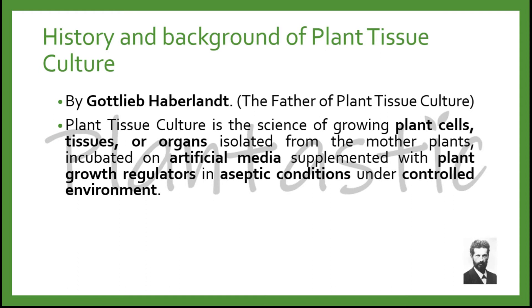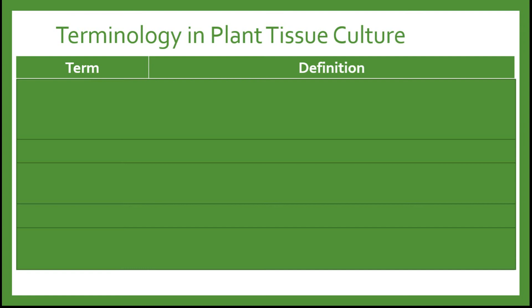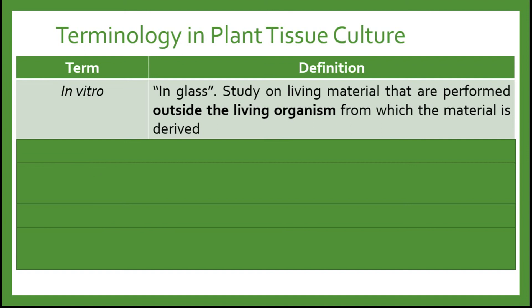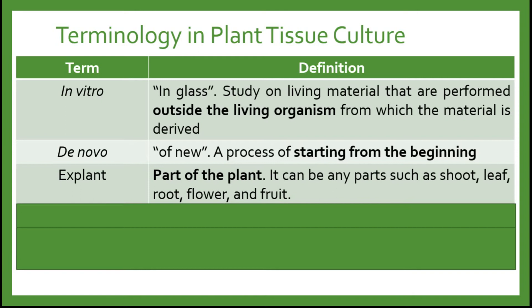Tissue culture techniques are routinely used for mass propagation and the establishment of disease-free stock material. Before we proceed into details, here are some common terms found in plant tissue culture. First, in vitro, which literally means 'in glass' — it is a study on living material performed outside the living organism from which the material is derived. De novo literally means 'of new' — it is a process of starting from the beginning. An explant is the part of the plant, which can be any parts such as shoot, leaf, root, flower, and fruit.